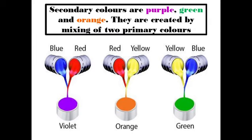Secondary colors are purple, green, and orange. They are created by mixing two primary colors. What are secondary colors? Secondary colors are purple, green, and orange, created by mixing two primary colors.